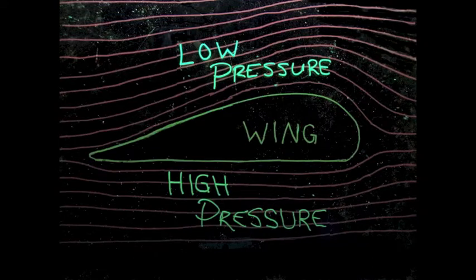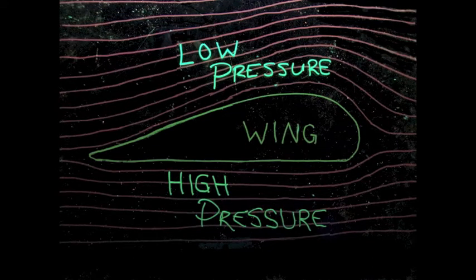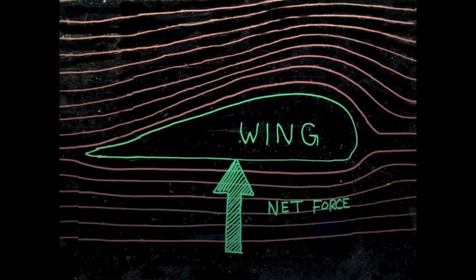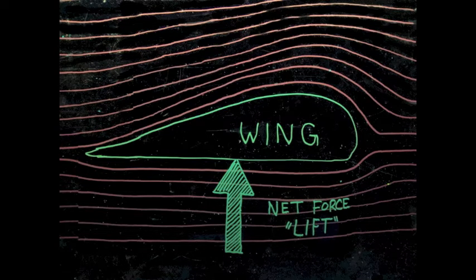According to Bernoulli, the faster-moving fluid will have a lower pressure than the slow-moving fluid. This means that there will be a net upwards force on the wing, because there are more collisions occurring on the bottom of the wing, resulting in lift.